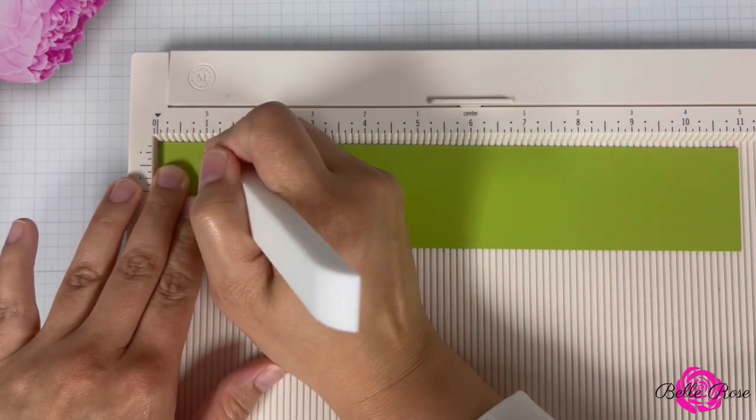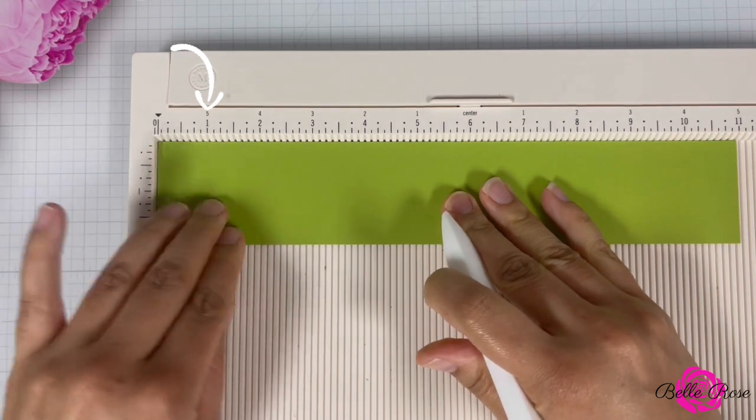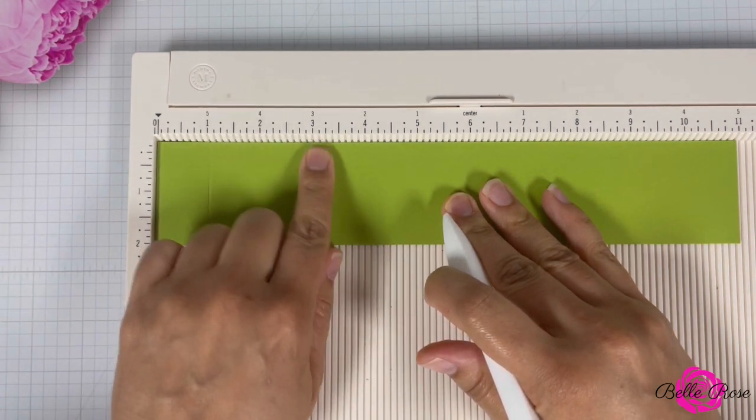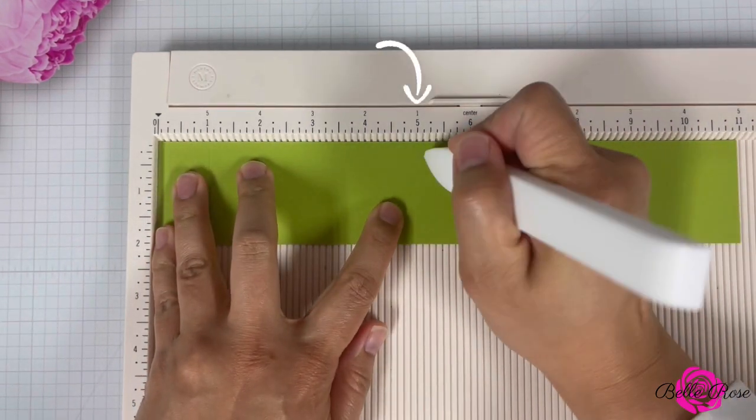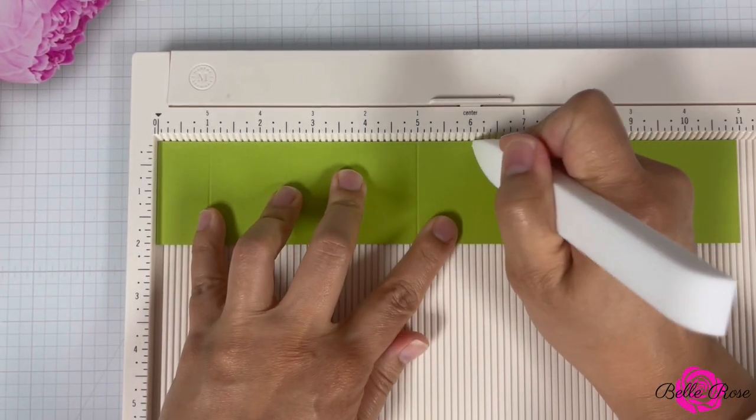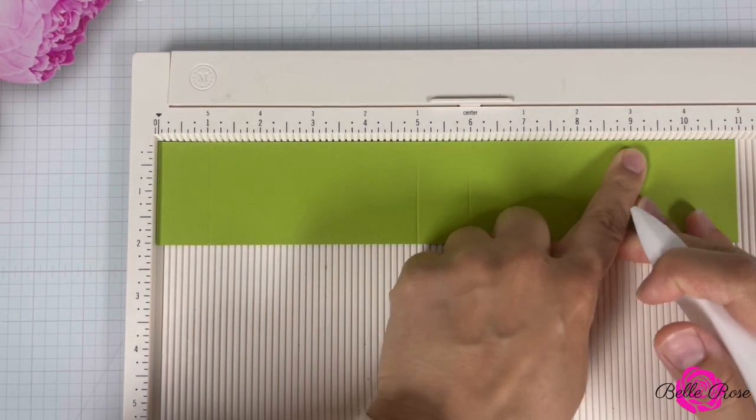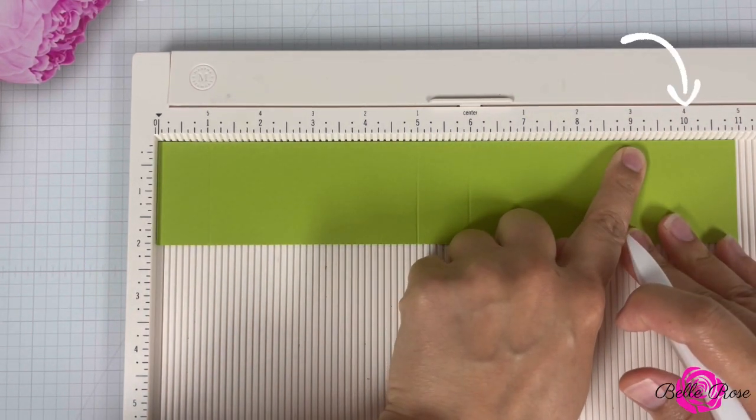Now it's time to score it. So we're going to score at 1 inch, then 5 inches, 6 inches, and finally, 10 inches.